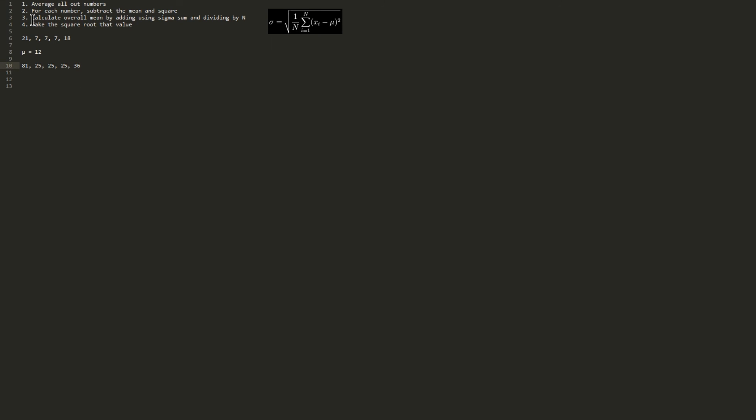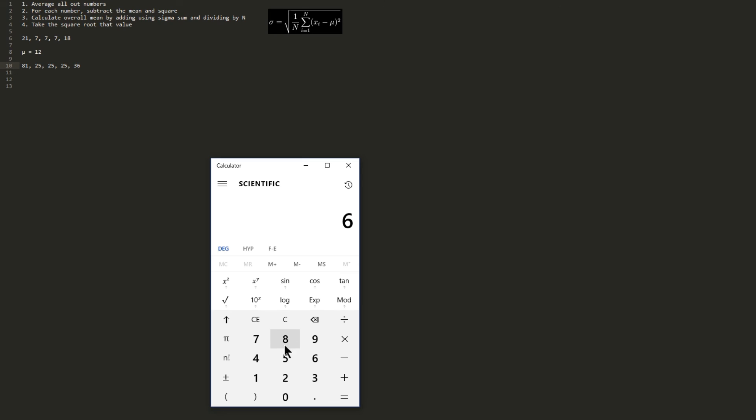Next step, calculate overall mean by adding using sigma sum and dividing by n. So all we have to do is add our five numbers and divide by 5 again. Divide by 5, 38.4.